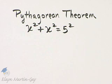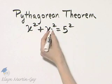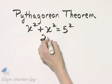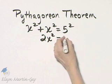So I want to solve this equation for x. Well, x squared plus x squared, that's 2x squared, is equal to 25.